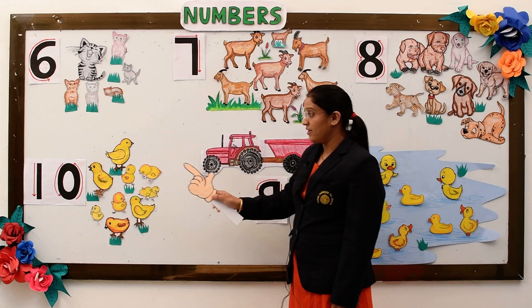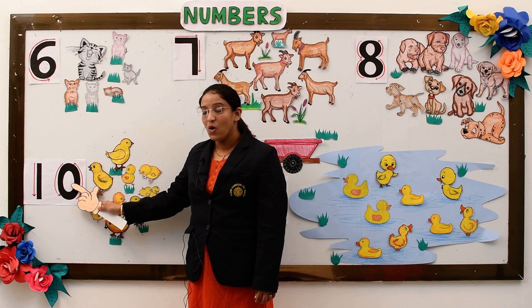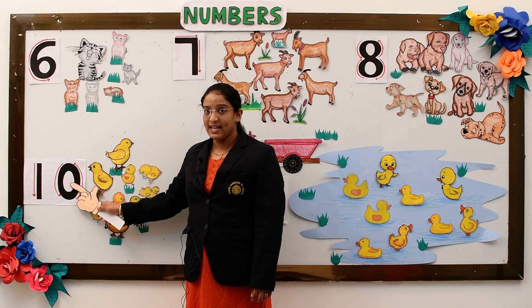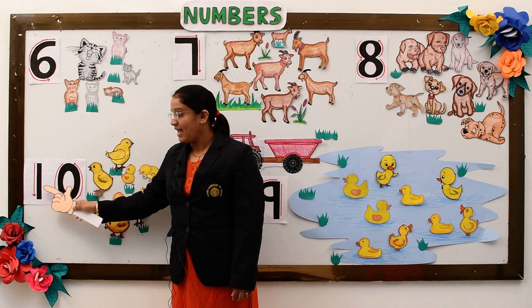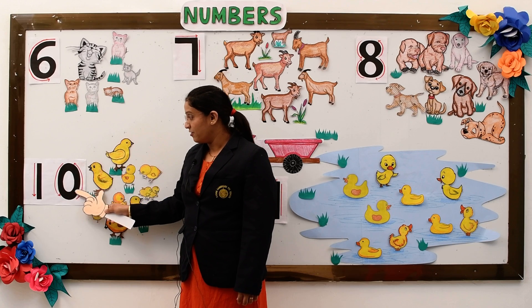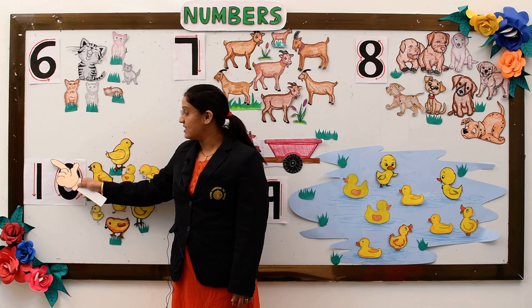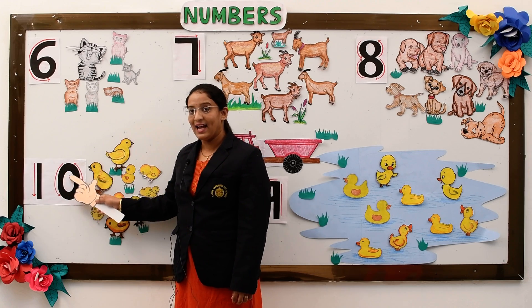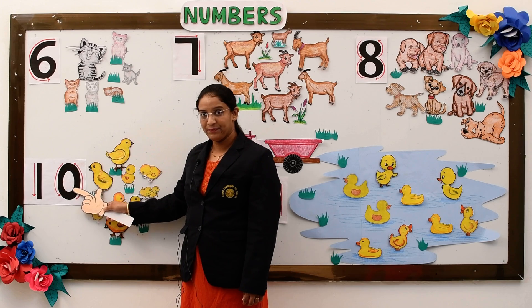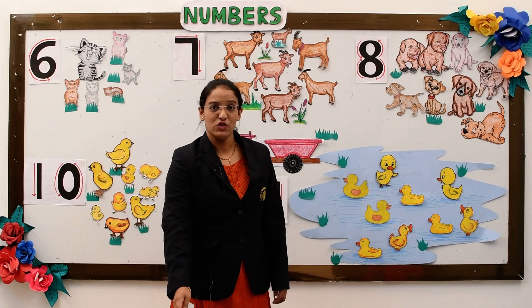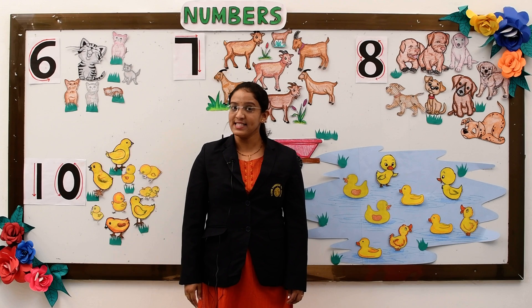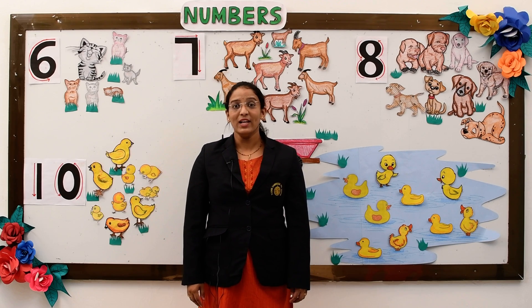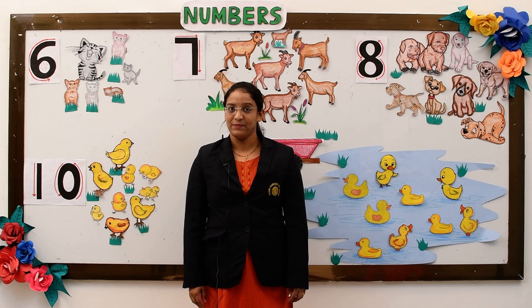The next number is number 10. The formation of number 10 is: a standing line and then make a curve. These are the formations from number 6 to number 10. Hope you all have learnt the formations. Thank you.